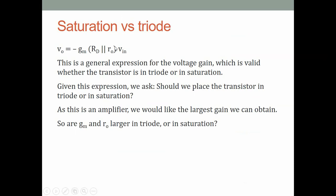Now an important question: do we keep the transistor in saturation or triode when using it as an amplifier? The answer is saturation, but let us justify it mathematically. Looking at the gain expression V_o = -g_m * (R_D || r_o) * V_in, we need to ask: is g_m larger in saturation or triode, and is r_o larger in saturation or triode? R_D is fixed, so g_m and r_o are the relevant quantities.